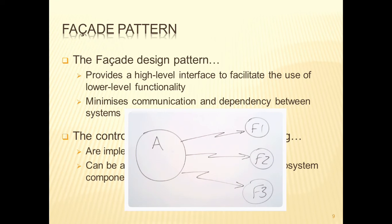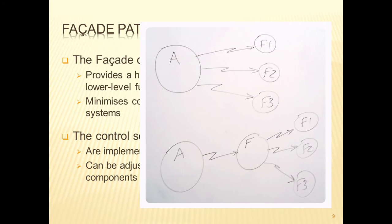That's all low-level interaction between the client, application A, and the functionality provided by the server. If we were to provide a facade — I'll call it F — then all interaction between A and the server goes via F. F will invoke functionality 1, functionality 2, and functionality 3 in the right order at the right time to achieve the right results. This immediately removes from application A the requirement to know anything about the underlying system that provides functionalities 1, 2, and 3. So we've got a separation now.